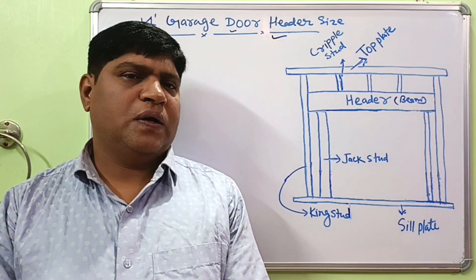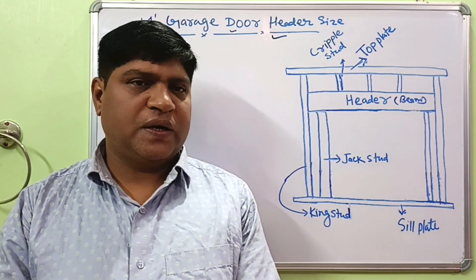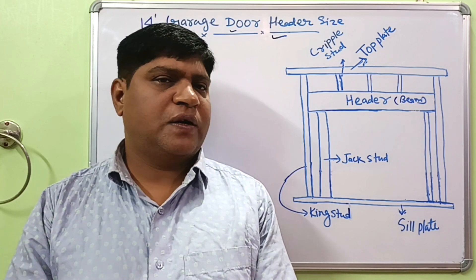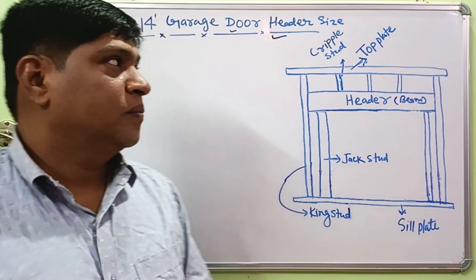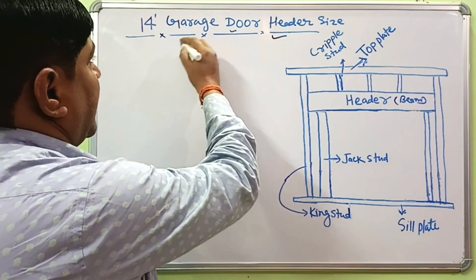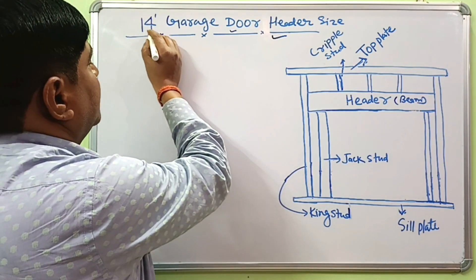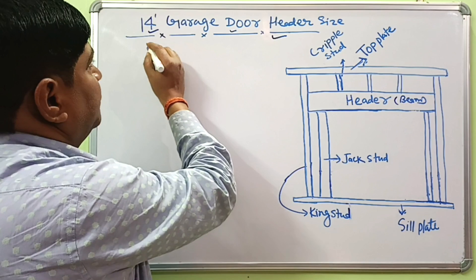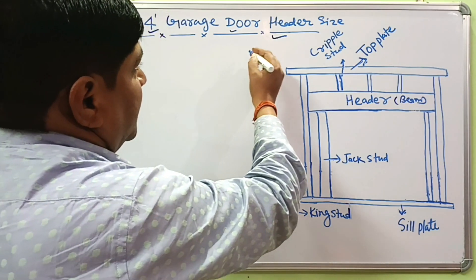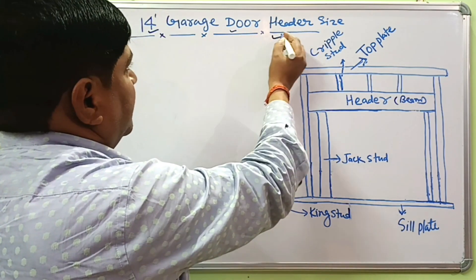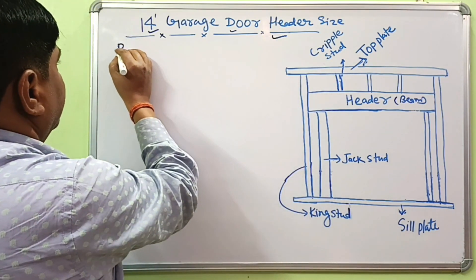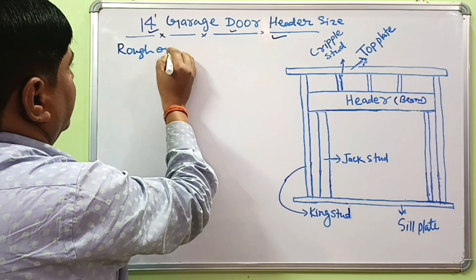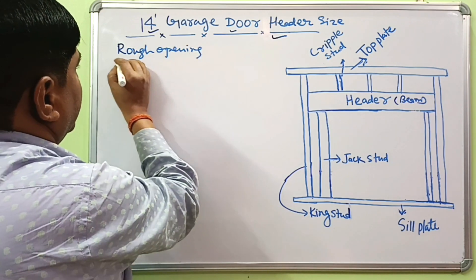Hi guys, welcome to our YouTube channel. Today in this video we are talking about how to find the correct header size for a 14-foot garage door. We'll discuss what the correct header size should be when your garage door width is 14 feet, and we'll also find the rough opening for a 14-foot garage door.